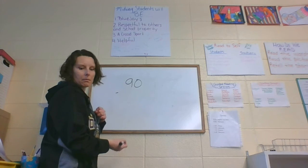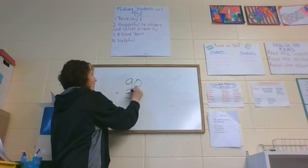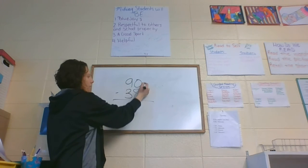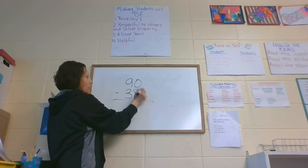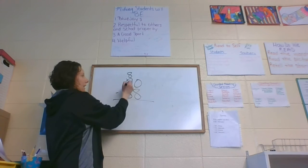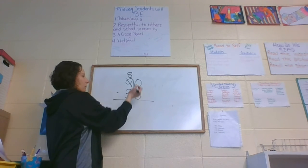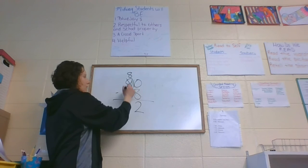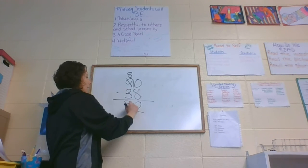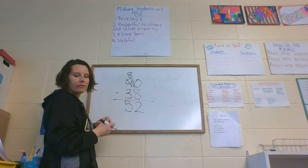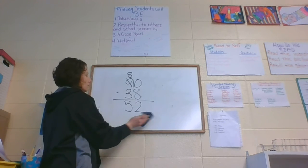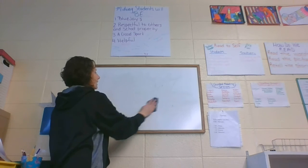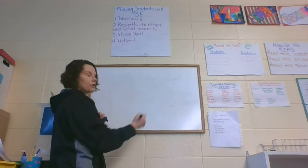Next one. 90 minus 38. Always start in the ones column. There's more on the floor. Go next door. Borrow 10 more. 9 becomes a 8. 0 becomes a 10. 10 minus 8 is 2. 8 minus 3 is 5. 52.